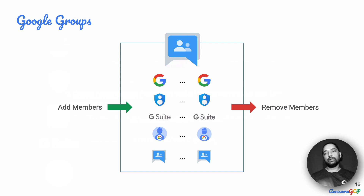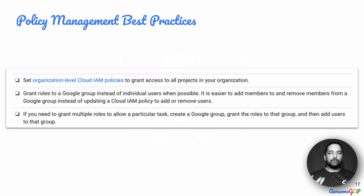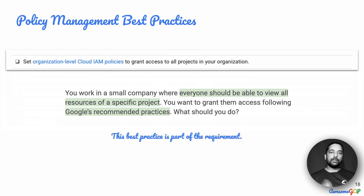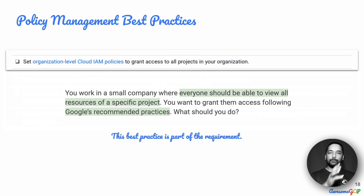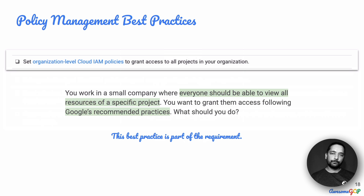To this group you can add or remove members. Now, what are the best practices for policy management around groups? The first best practice suggests setting organization-level Cloud IAM policies to grant access to all projects in your organization. The recommendation is that when you have an organization, it is better to have certain policies set at the organization level rather than having individual project owners define policies — otherwise you get a very varied approach across projects instead of a unified approach for the entire organization.